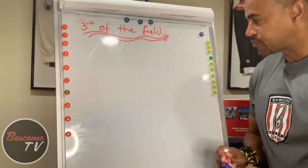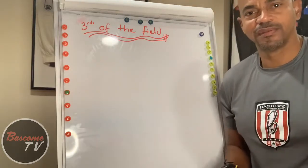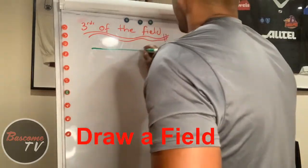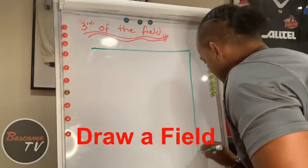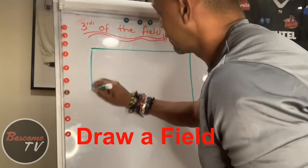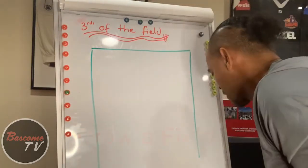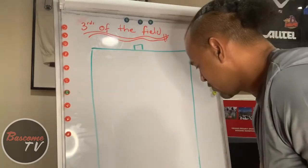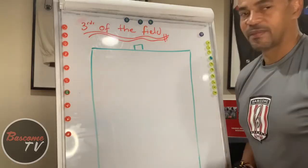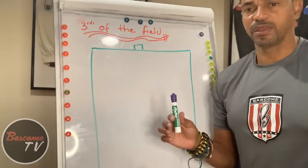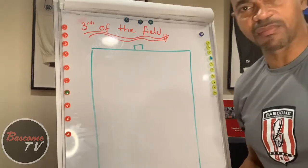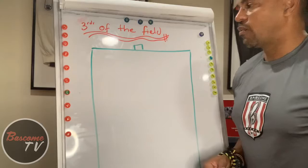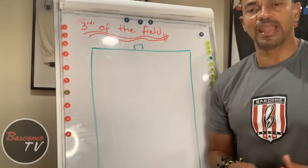Once you get your paper, I want you to draw a field. Let me draw my field here — go across, come down, come across. I'm going to put my little lines in here. Draw your field. I don't think you can see the bottom of my field but it is there.